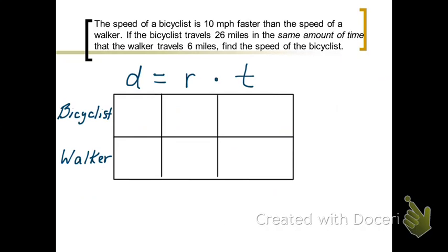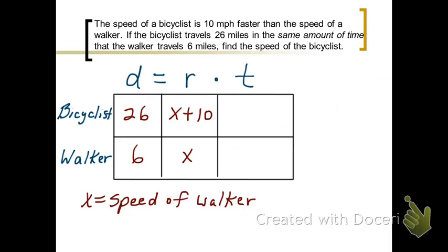Well, we were asked to find the speed of the bicyclist, but that actually isn't what we want to call x. Notice it says that the speed of the bicyclist is 10 miles per hour faster than the speed of a walker. So if we knew the speed of the walker, then we know the bicyclist is going 10 miles per hour faster. So let's let x equal the speed of the walker. So that means if the bicyclist is going 10 miles per hour faster than that speed, then x plus 10 represents the speed of the bicyclist. Now the distance of the bicyclist was 26 miles.